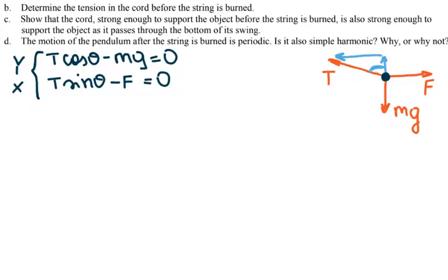Because T cosine theta is known because we know the angle, and m is given and g is known, I can solve for part B. I can show that my T is equal to mg divided by cosine theta.